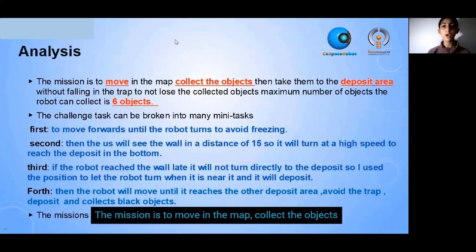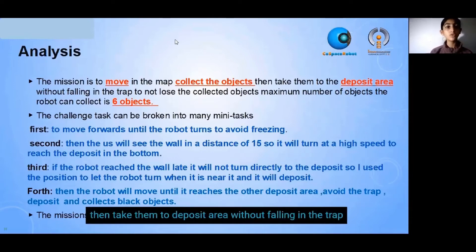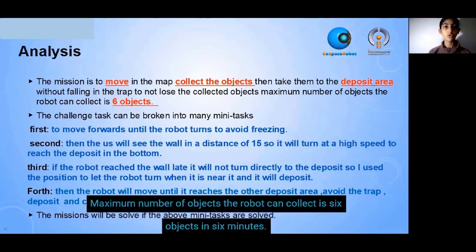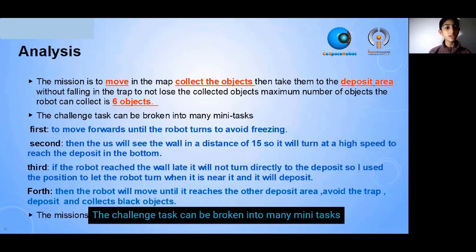The mission is to move in the map, collect the objects, then take them to the deposit area without falling in the trap, to not lose the collected objects. The maximum number of objects the robot can collect is 6 objects in 6 minutes. The challenge task can be broken into many mini-tasks.